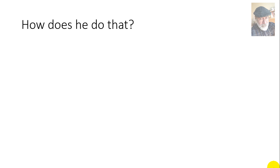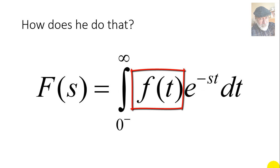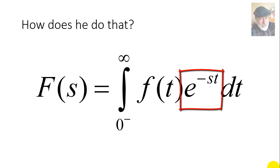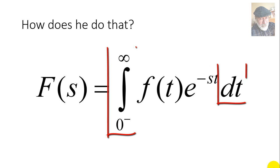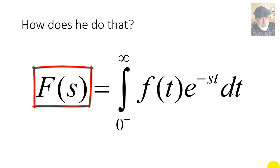How does he do that? He takes the function of time f(t) and multiplies it by a mixed function, e to the negative st. I call it mixed because it depends on variables from both universes — it depends on t and it depends on s. Then he integrates from 0 to infinity along the time axis, eliminating the time variable and keeping a function of s: the transformed version of f(t), which is F(s).